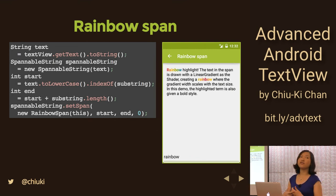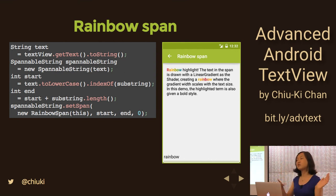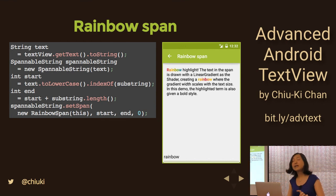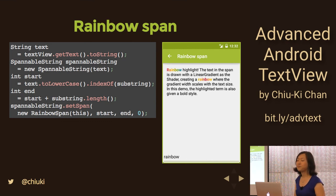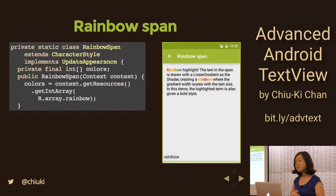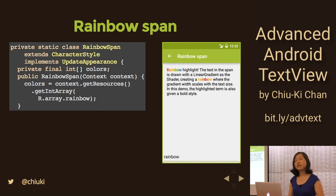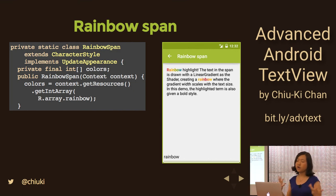Getting more interesting: a rainbow highlight. The demo has an EditText at the bottom — whatever you type it searches the block of text and highlights matches in rainbow color. The code sets the span similarly to what we've seen. The RainbowSpan extends CharacterStyle because it operates at the character level, and also implements UpdateAppearance. In the constructor, we load an array of colors — red, orange, yellow, green, blue — and create a LinearGradient shader.